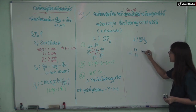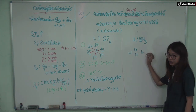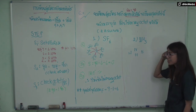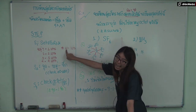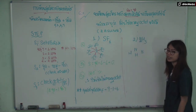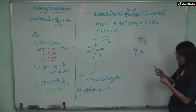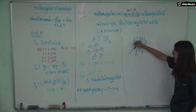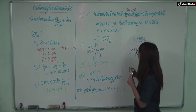Hydrogen has 1 valence electron. So we will take the hydrogen — hydrogen has 1 electron — 1, 1, 1, 2.